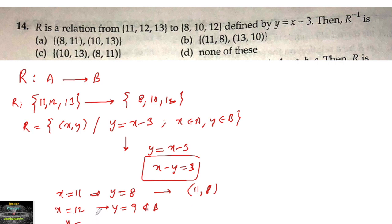If I take x equals 13, then y equals 13 minus 3, that should be 10. So (13, 10) is another ordered pair. These are the only possible ordered pairs which form, and hence we can write our relation R equals {(11, 8), (13, 10)}.